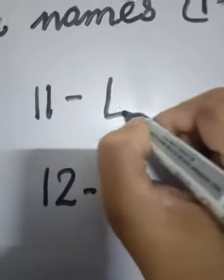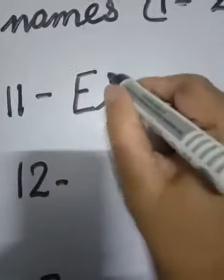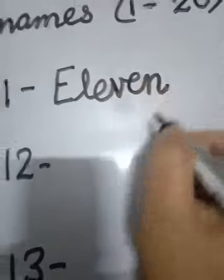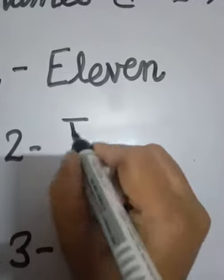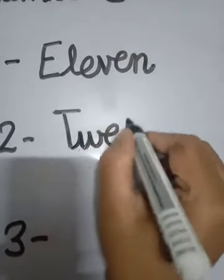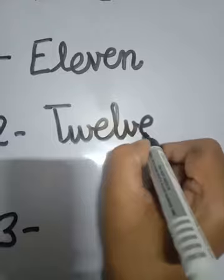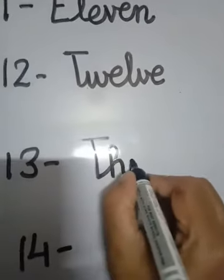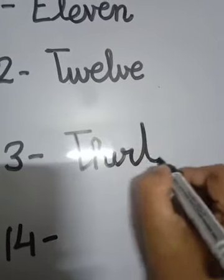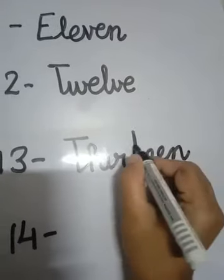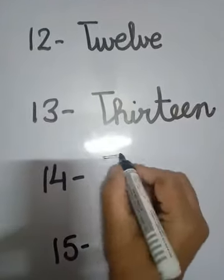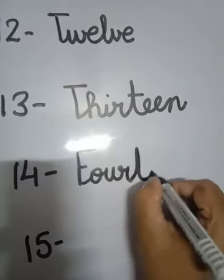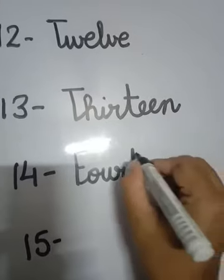Eleven: E-L-E-V-E-N-11. Twelve: T-W-E-L-V-E-12. Thirteen: T-H-I-R-T-E-E-N-13. Fourteen: F-O-U-R-T-E-E-N-14.